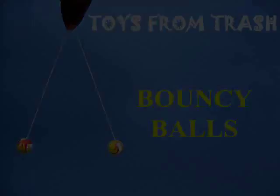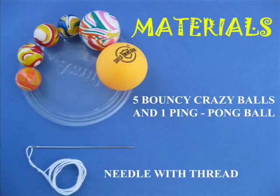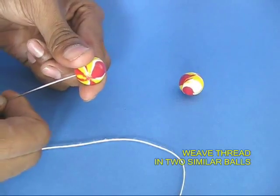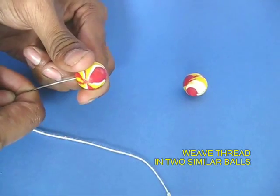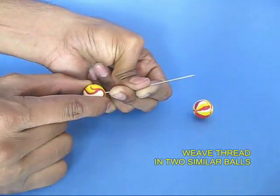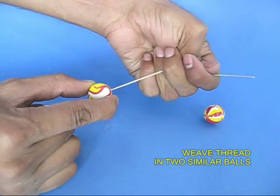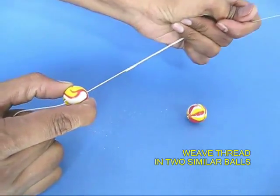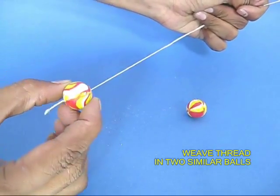These bouncy balls are both a very nice science experiment as well as a very nice toy. Take two of these crazy balls and poke a needle through them to weave a thread. The end of the thread would be a knot. This would ensure that the thread does not come out.